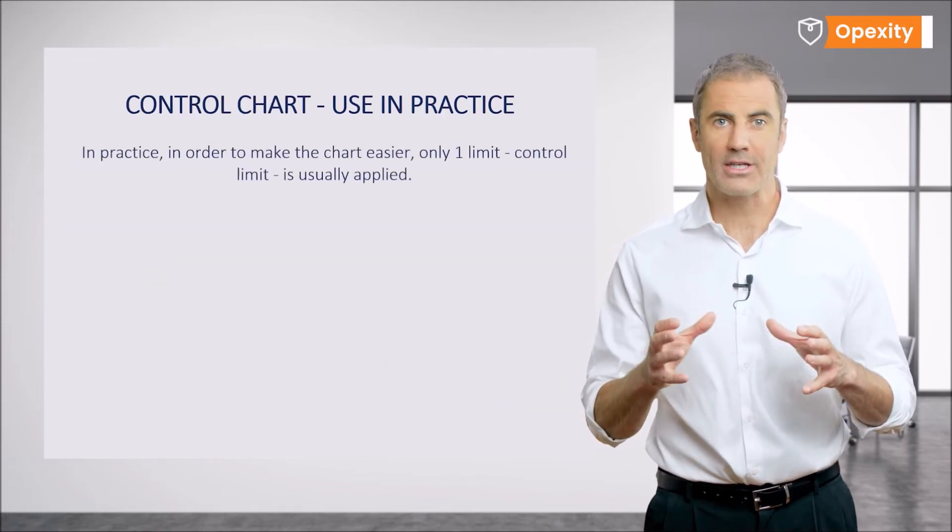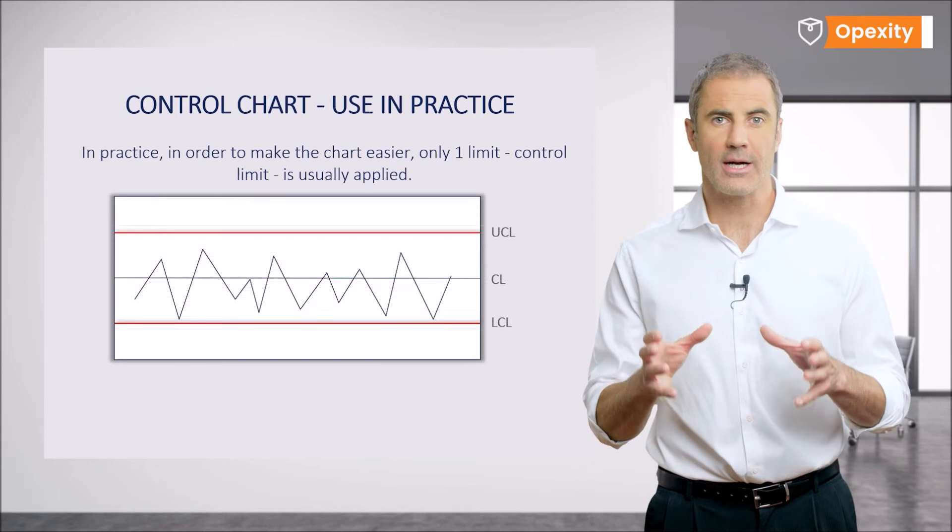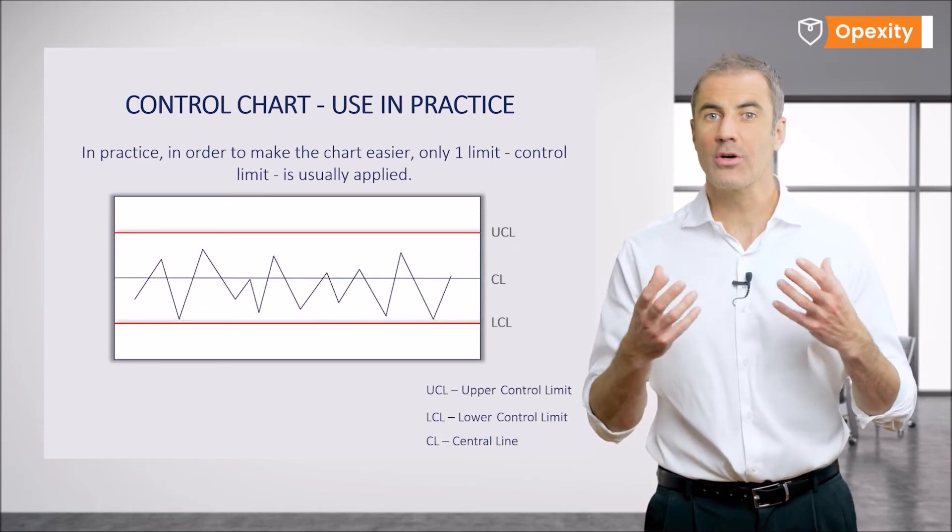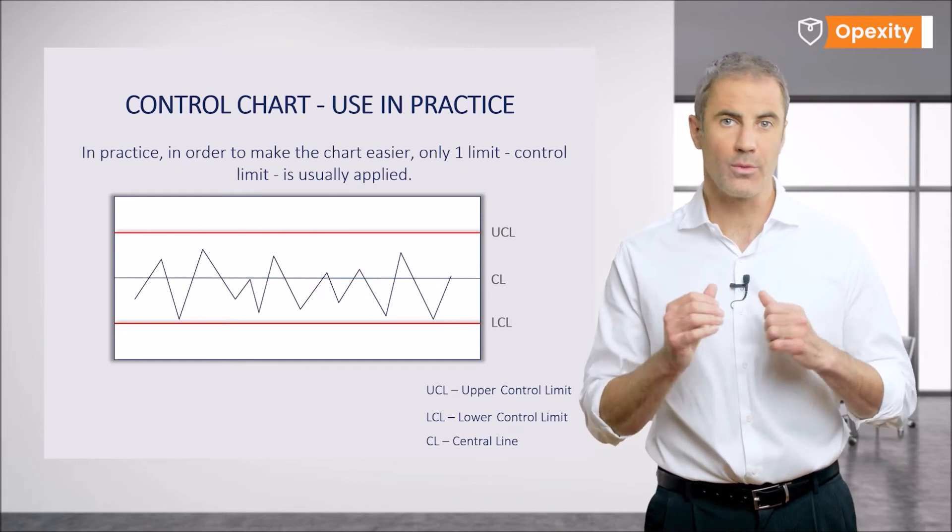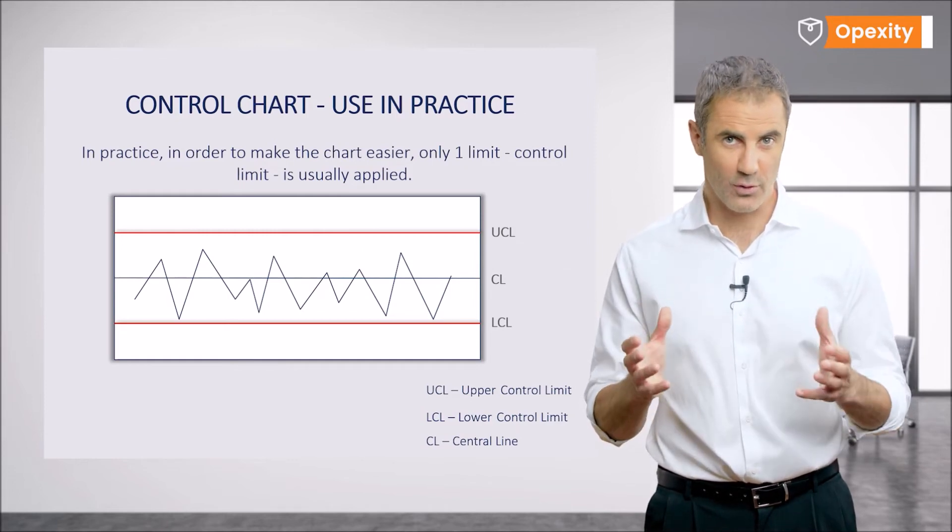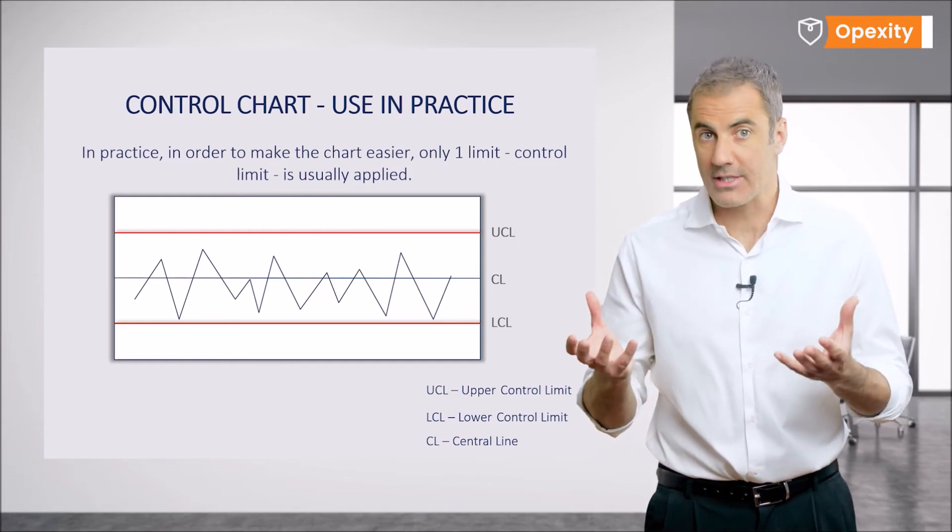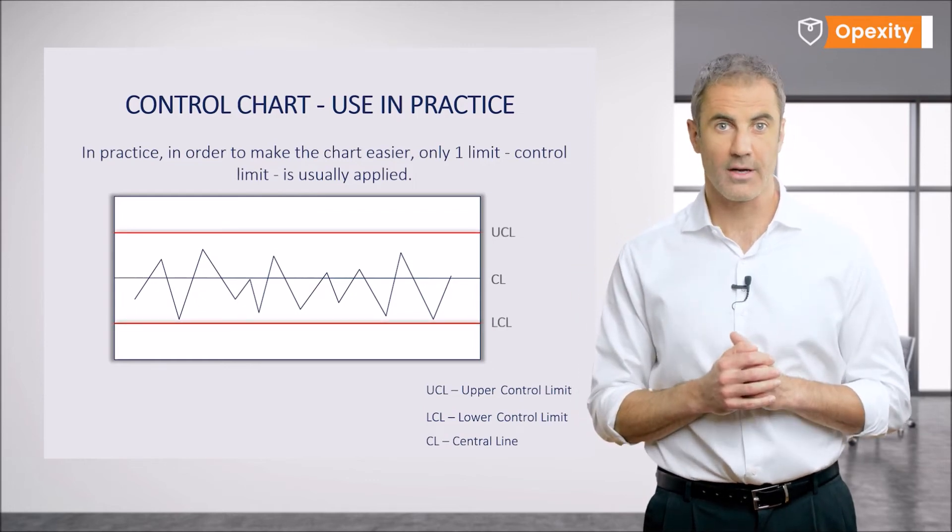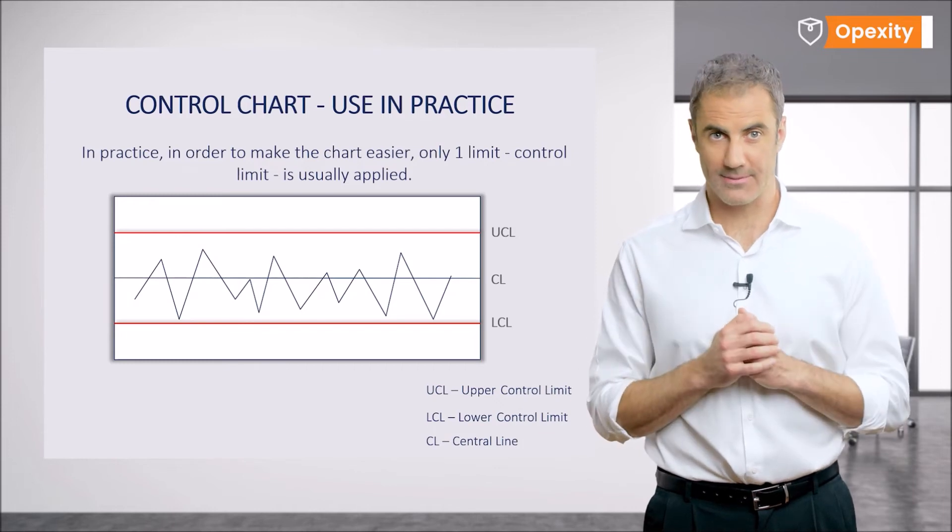In practical applications of the charts, the two different types of limits, warning and control, are not used and the so-called control limits are the only ones noted. Of course, we will have two types of such limits, an upper control limit and a lower control limit. The control limits correspond to the warning limits.